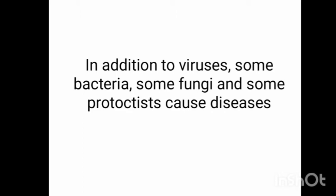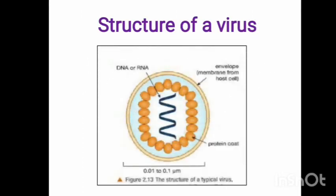Before looking at the diseases caused by these organisms, let us first quickly see the structure of these organisms. If you remember, in our previous class we studied the structure of a virus. Viruses are smaller than bacteria; they do not have any cell wall, mitochondria, or nucleus, and they cannot live independently. They reproduce inside host cells and have genetic material in the form of either DNA or RNA, which is surrounded by a protein coat. They also take the envelope from the host cell.